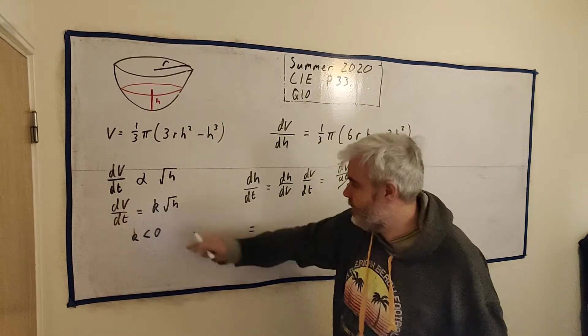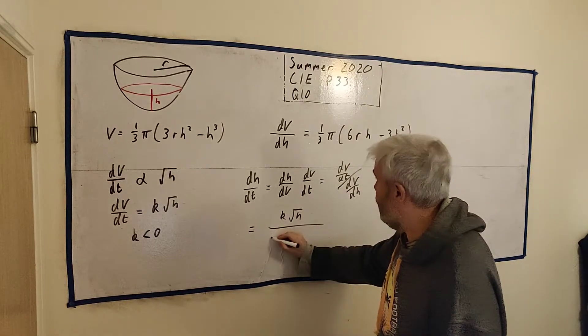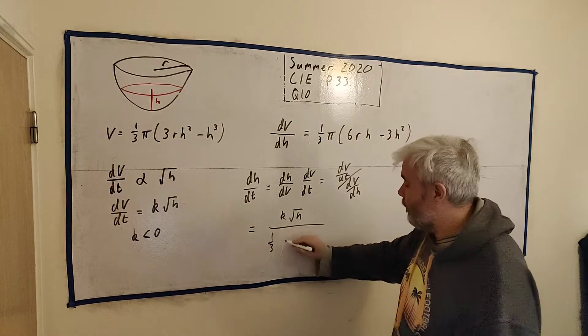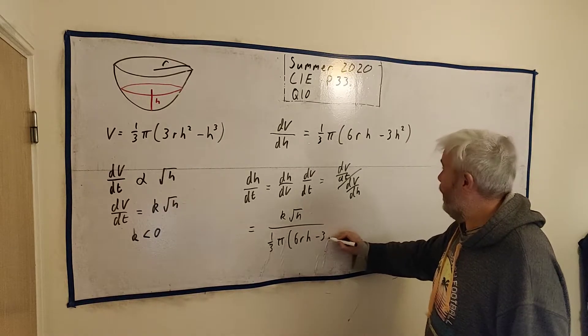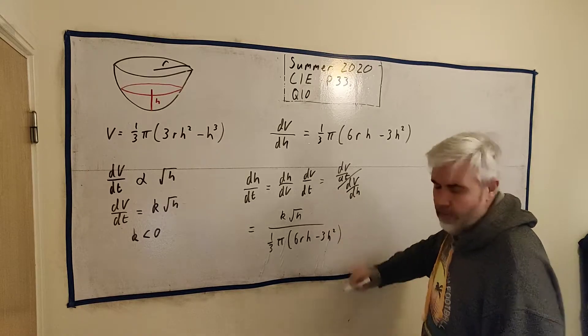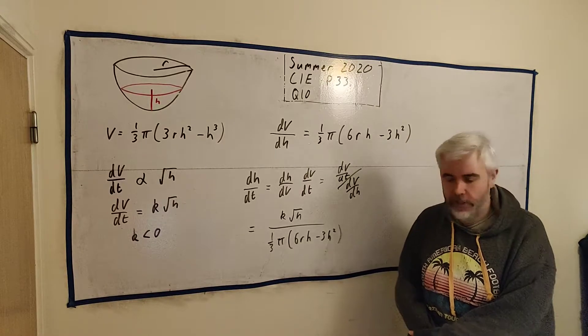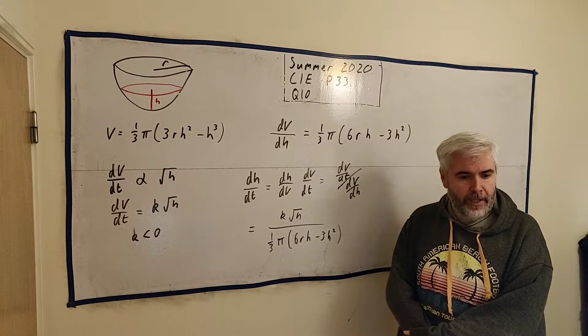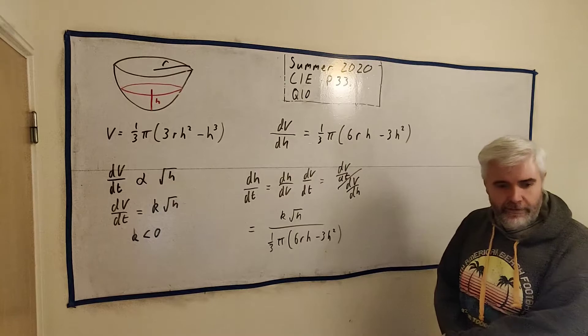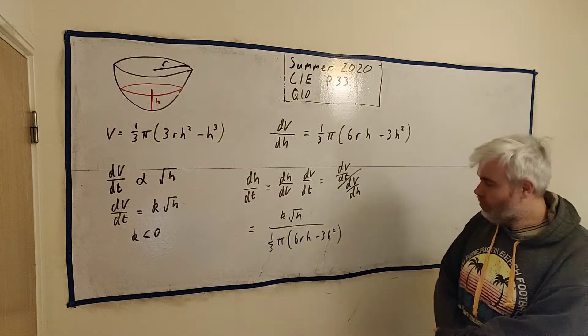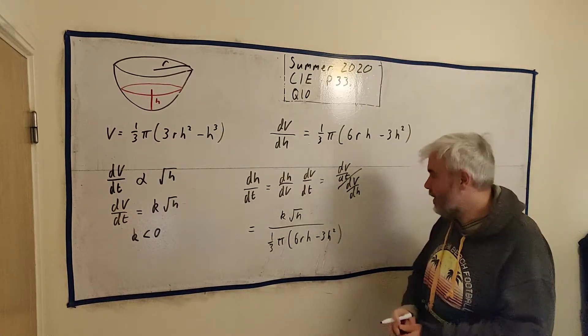So let's put that together. We get k multiplied by square root of h divided by this. I'll clean it up a bit to make it look like their answer, because they've given us this answer already. It doesn't quite look like this yet. So this is the point you probably should look at that and go, oh it's not quite what I have. Can I make it look similar? And you can.